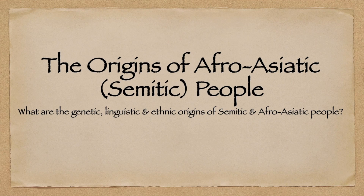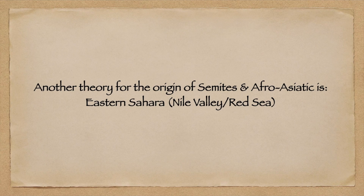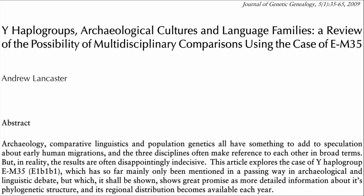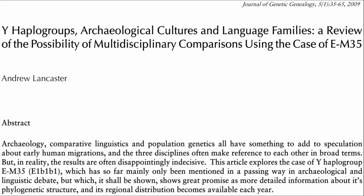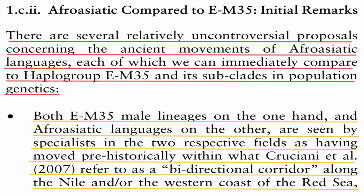The origins of Afro-Asiatic and Semitic people: what are the genetic, linguistic, and ethnic origins of Semites and Afro-Asiatic? One theory for the origin of Semites and Afro-Asiatic is the Eastern Sahara, also known as the Nile Valley and Red Sea region. We'll look at the Eastern Saharan origin of Afro-Asiatics using a study called 'Why Haplogroups, Archaeological Cultures and Language Families: A Review of the Probability of Multidisciplinary Comparisons Using the Case of E-M35' by Andrew Lengsker.